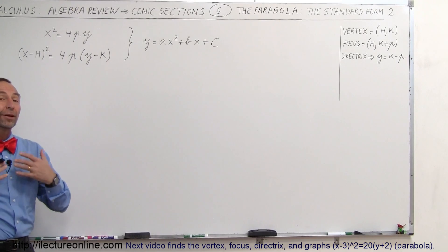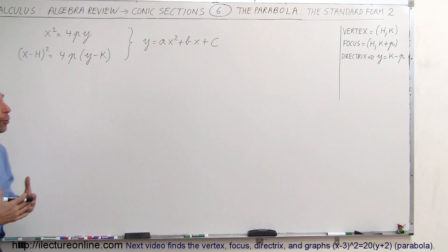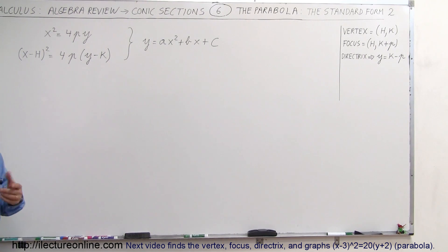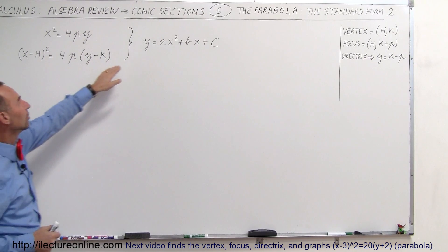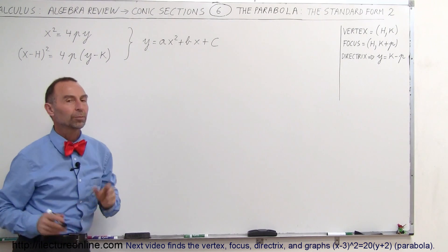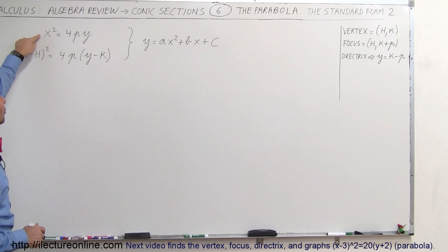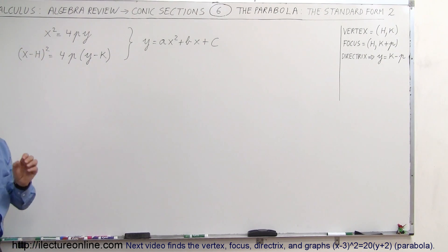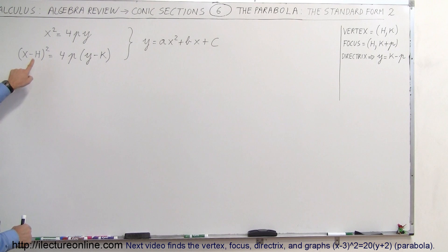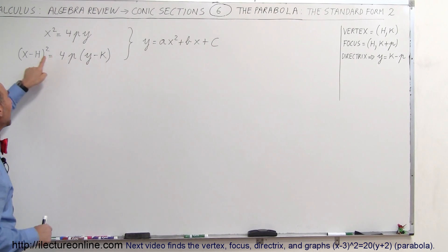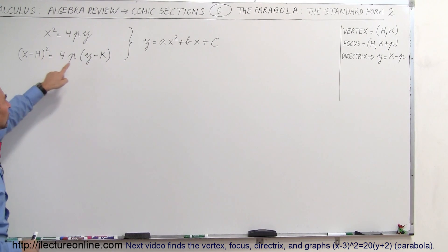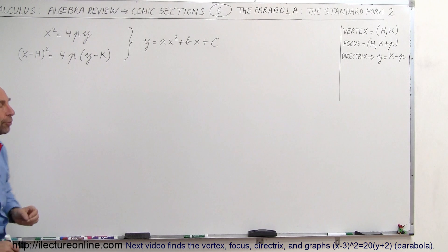Welcome to our lecture. To get a better understanding of the standard form of the parabola, let's compare the standard form to the traditional form y equals ax squared plus bx plus c. This is the equation for the standard form we use when the vertex is at the origin, and this is the one we use when the vertex is at (h, k), h being the x-coordinate and k being the y-coordinate of the vertex.